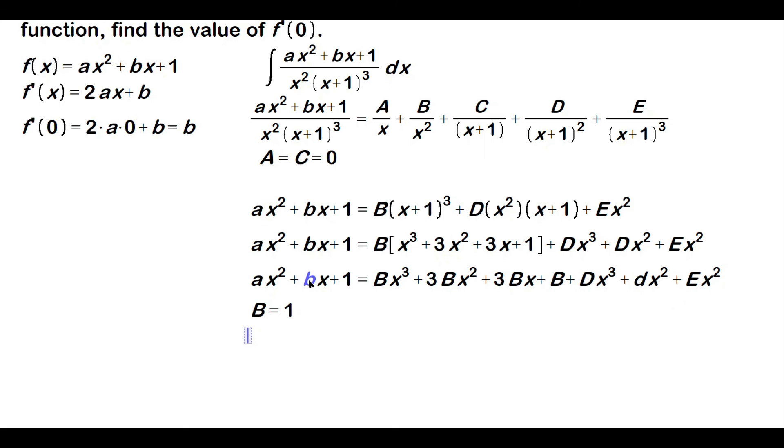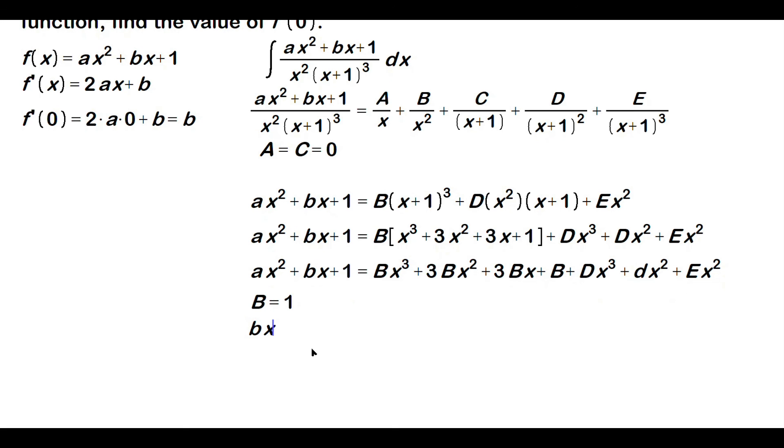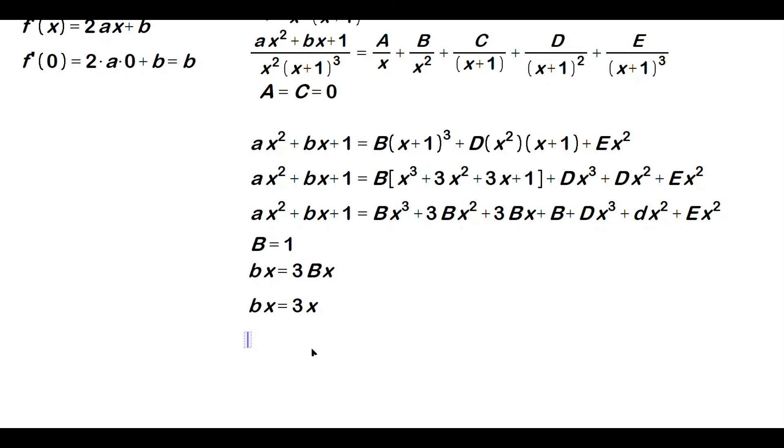I would say bx from the left side would be equal to 3Bx from the right side. But we know that B is 1. So we have bx is equal to 3x, because B is 1. Divide the x away. X is not 0. So b is equal to 3.